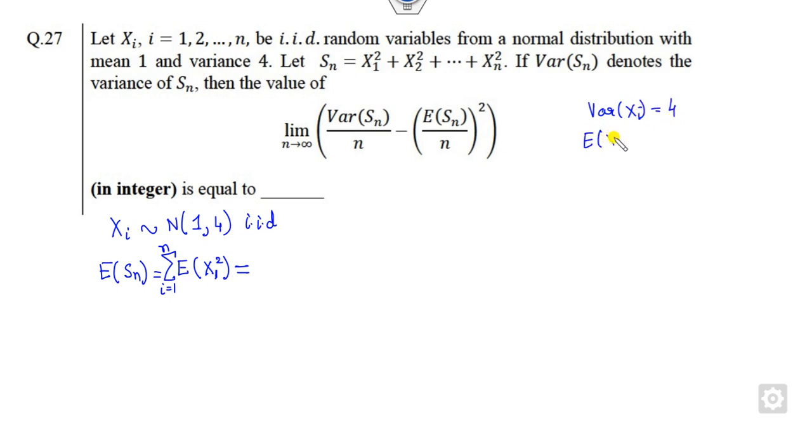I can apply the definition of the variance here minus EX whole square. What is the answer of the E of XI square? That is nothing but 5. Therefore, this number is 5, and E of SN is 5N.